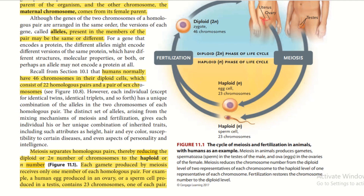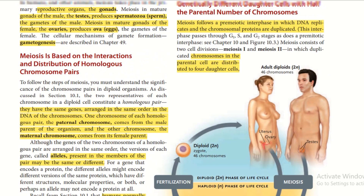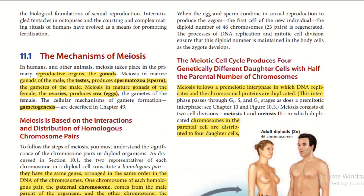Each gamete produced by meiosis receives only one member of each homologous pair. For example, a human egg produced in the ovary or a sperm cell produced in the testes contains 23 chromosomes — one of each pair. When the egg and sperm combine in sexual reproduction to produce a zygote, the first cell of a new individual, the diploid number of 46 chromosomes, or 23 pairs, is regenerated.